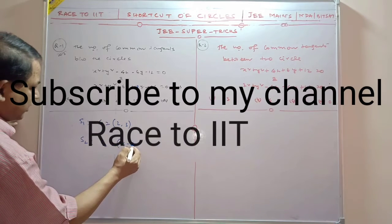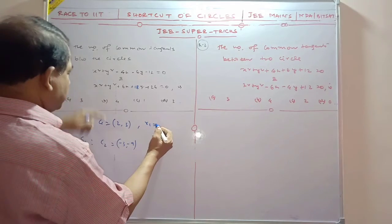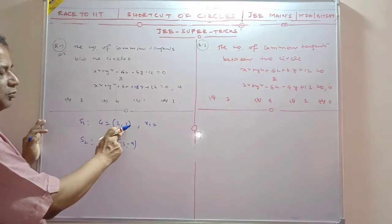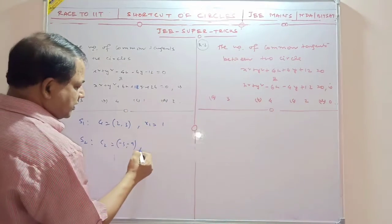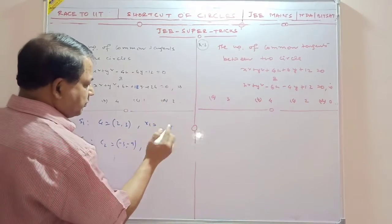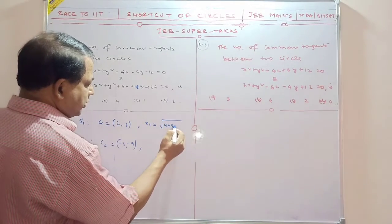And what is R1? R1 squared is 4 plus 9 minus 12. So that is just 1.